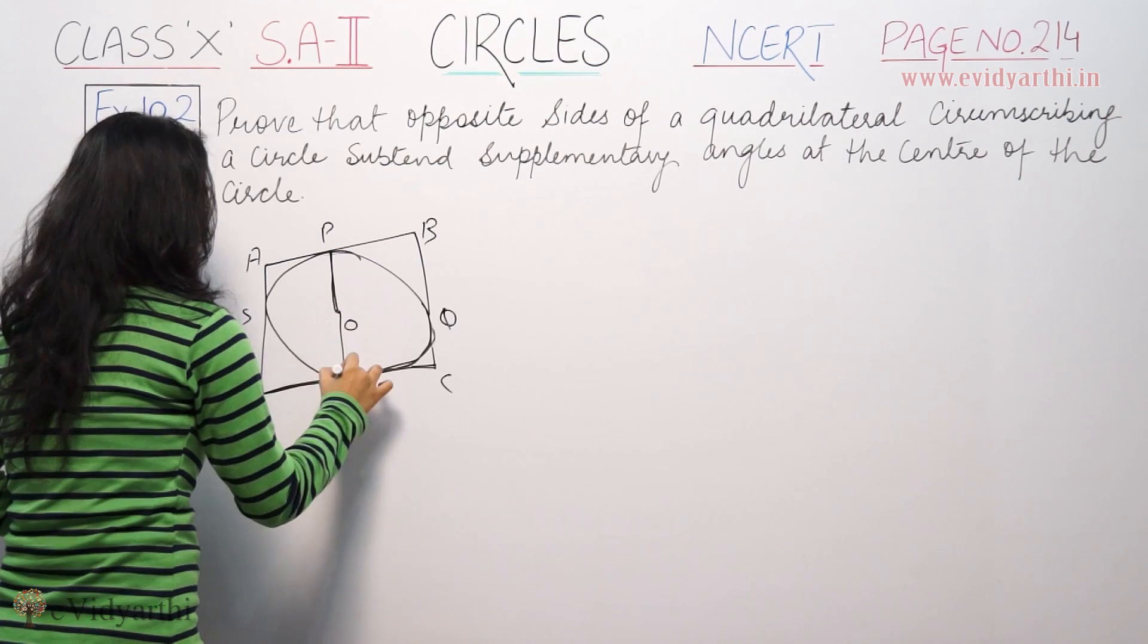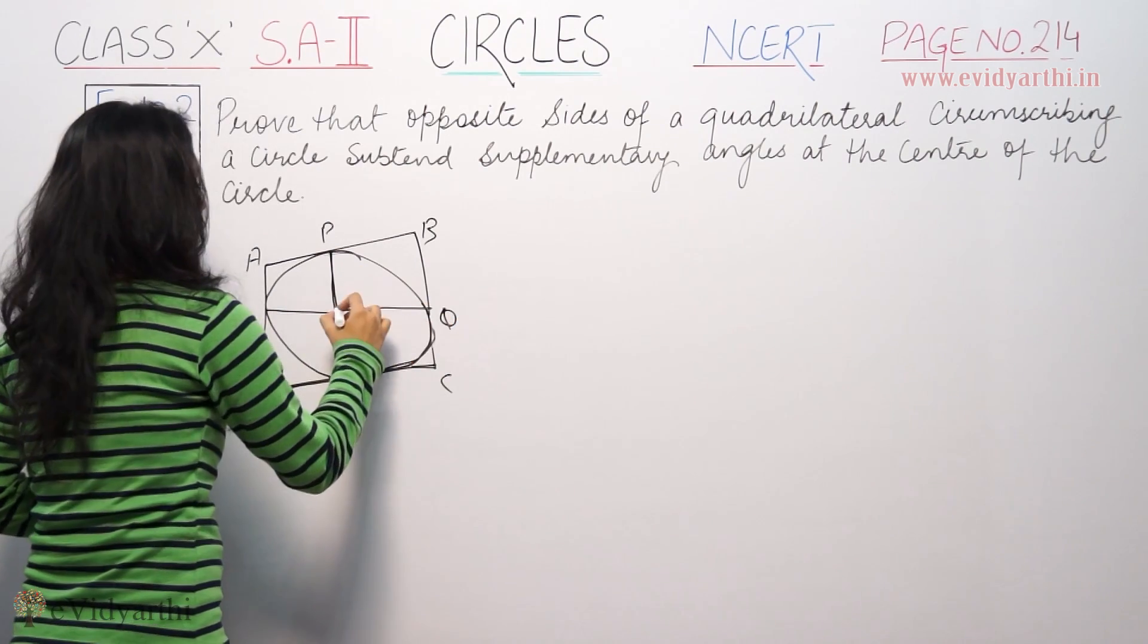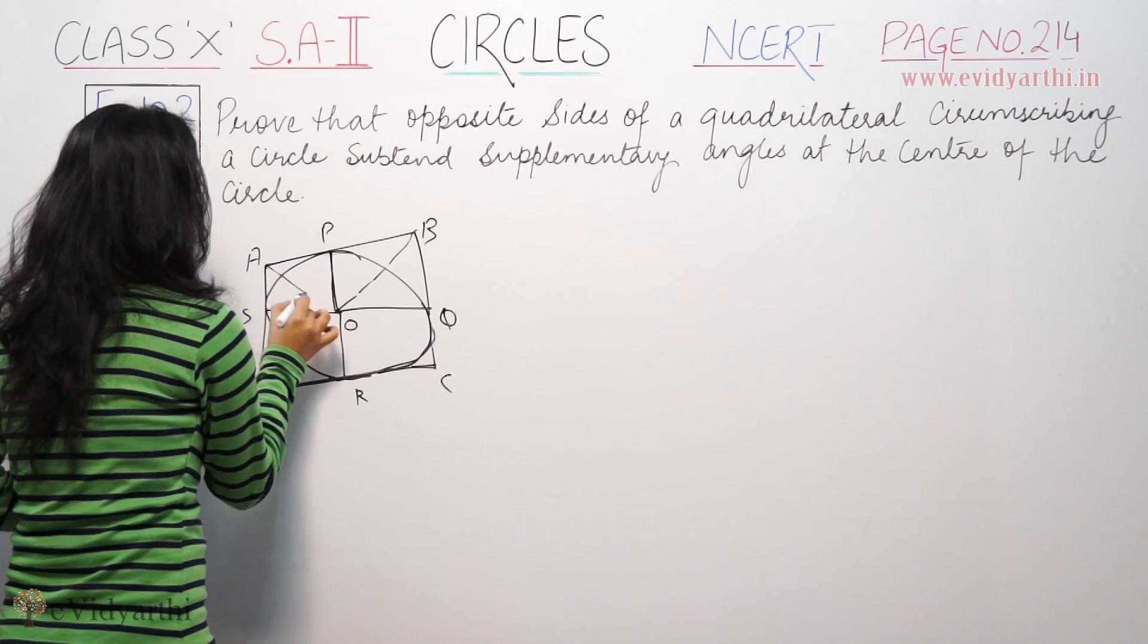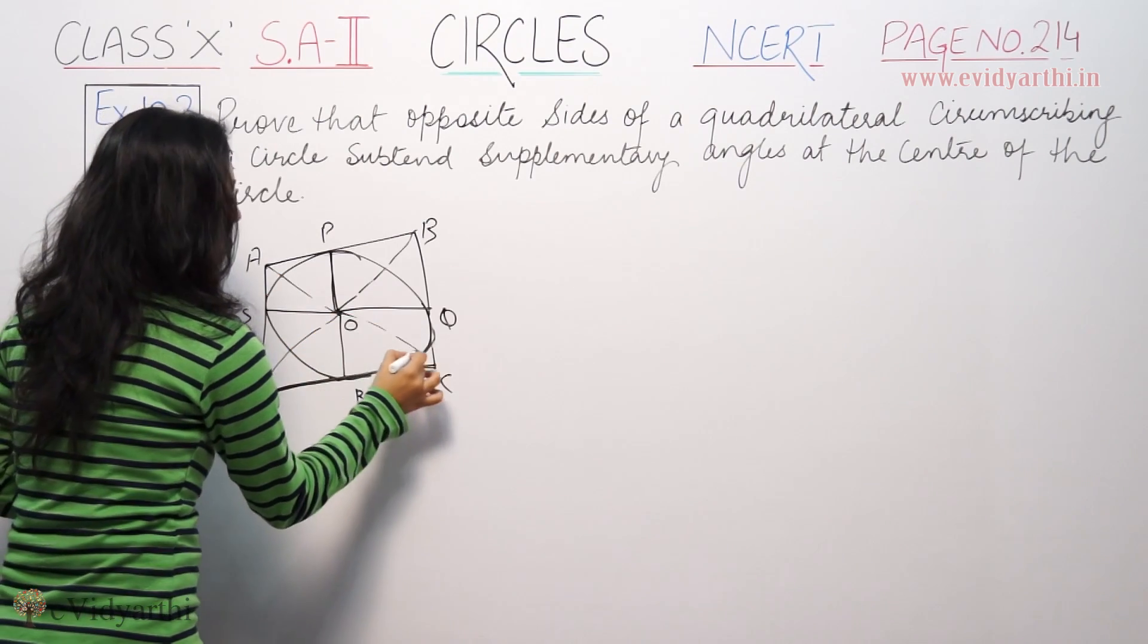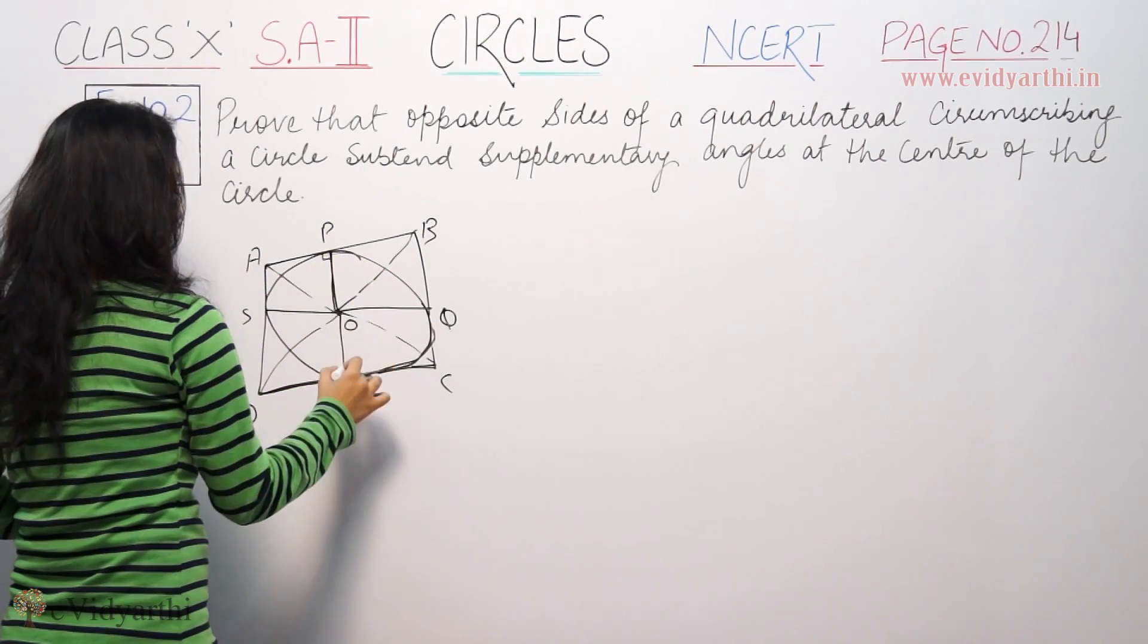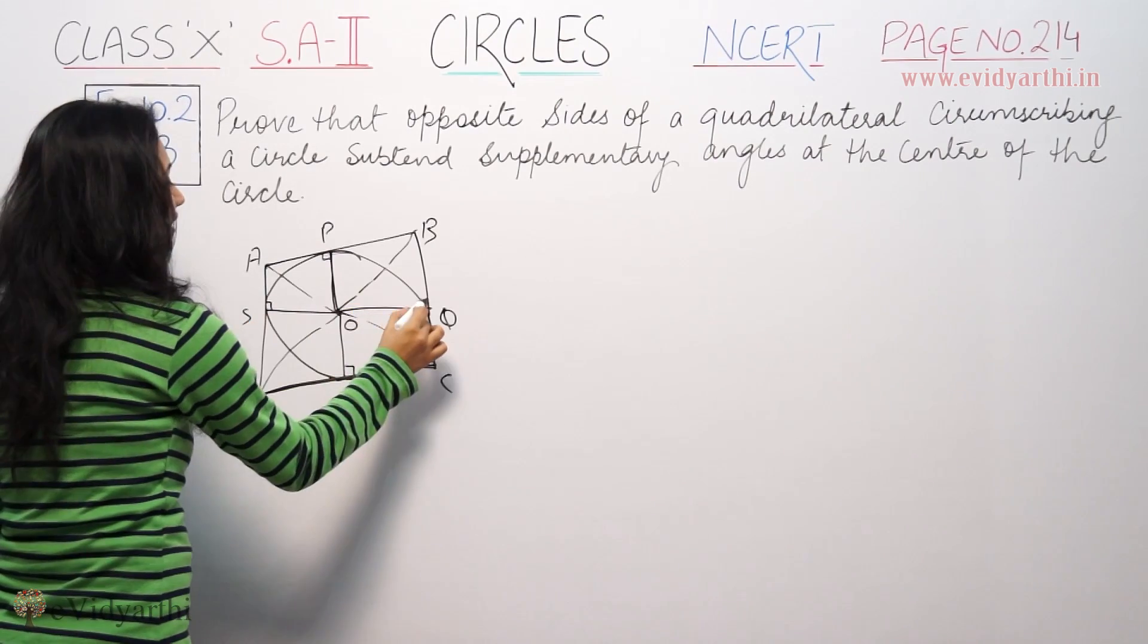This is the center. I'm joining these lines from the center to each tangent point. This is 90 degree angle, this is also 90 degree angle, this is also 90 degree angle.